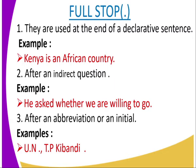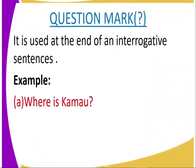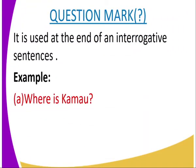Full stops are also used after an abbreviation or an initial. For example, U.N. — you place the full stop after U, then after N. Also, when abbreviating names of people with long names, for example: T. P. Kibandi. Next, we're going to look at question marks.